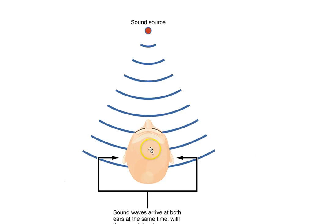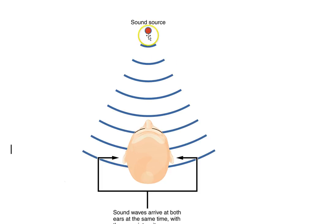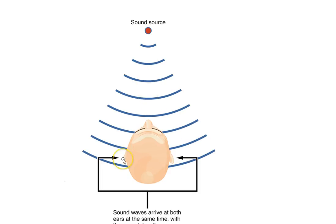To begin, consider this person here just looking forward. Of course, we have two ears, a left ear and a right ear, and if the sound happens to be directly in front of us, the sound waves — those vibrations in air — will be detected by both ears simultaneously.